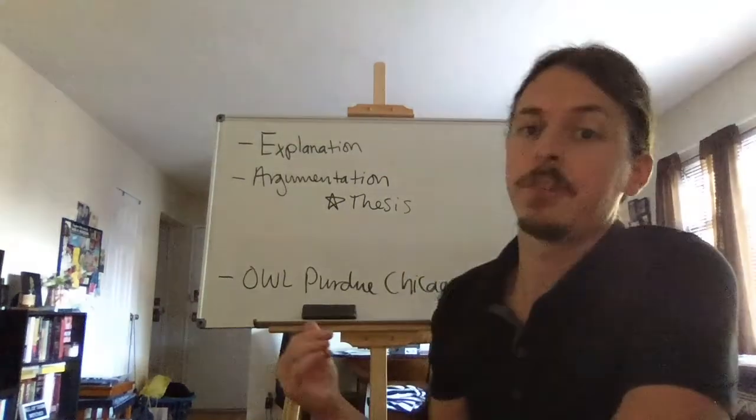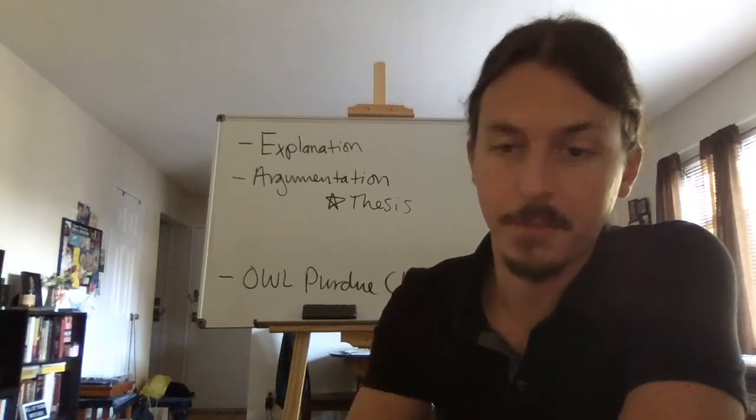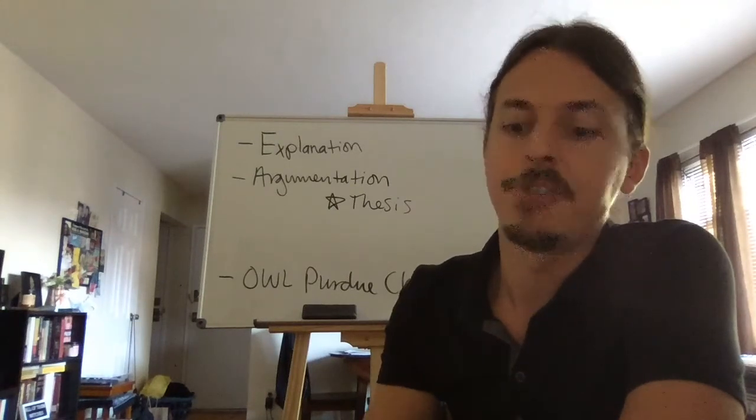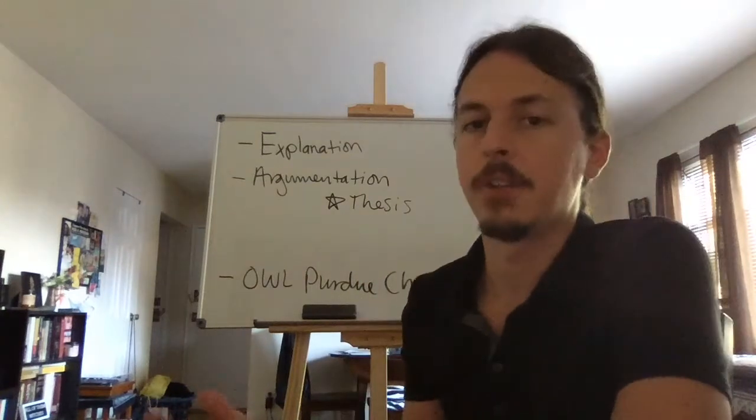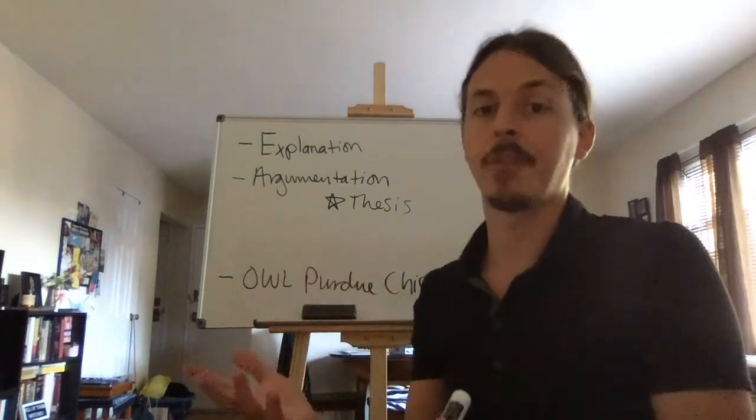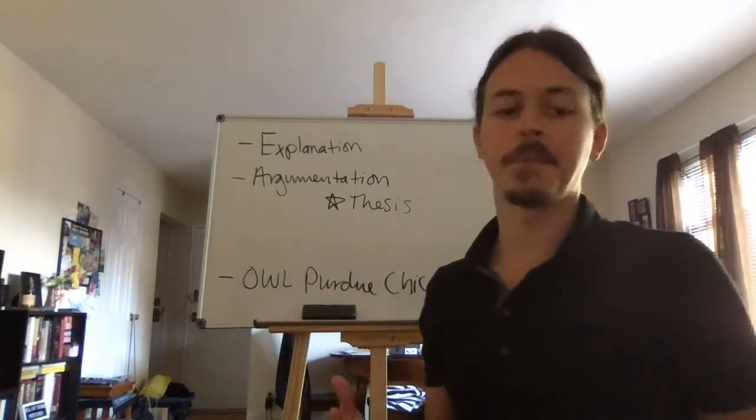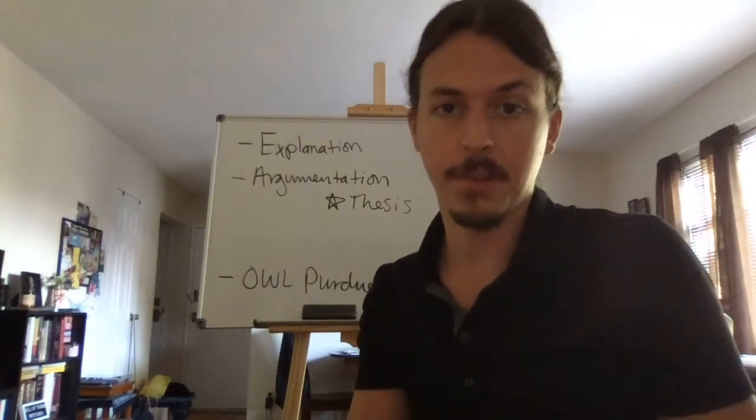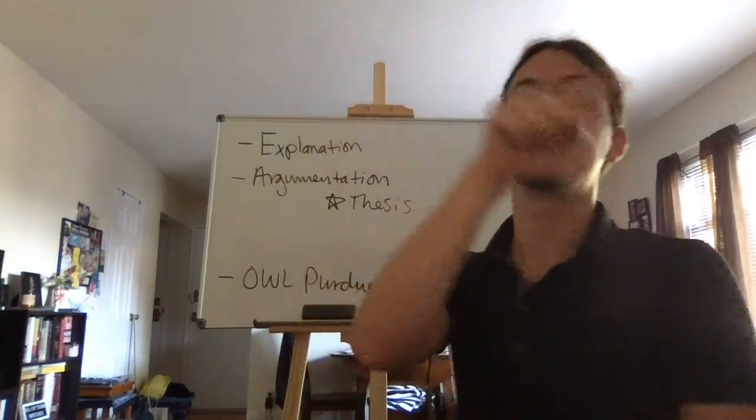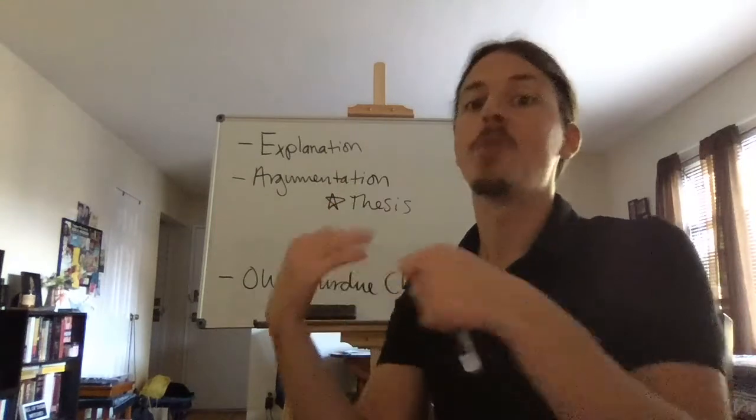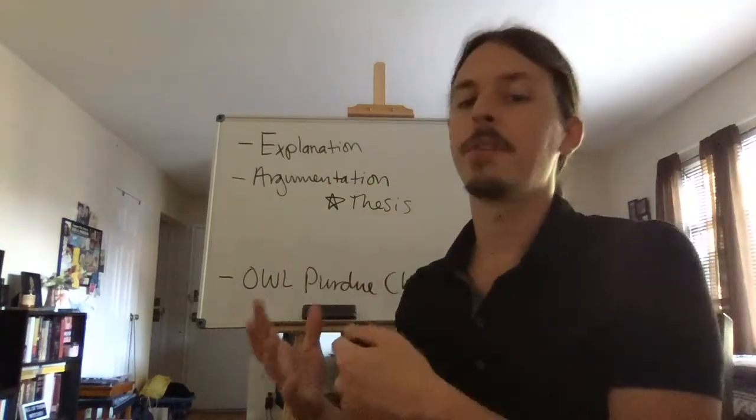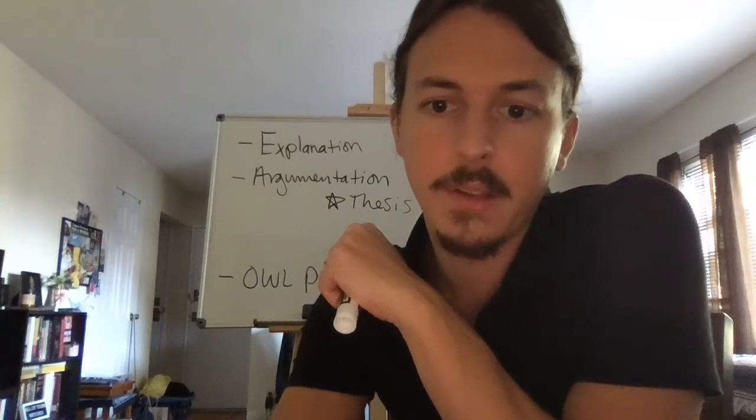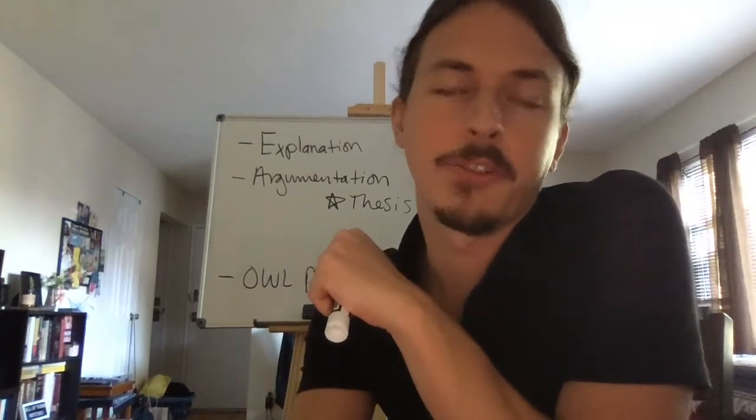After you've made your case, you want to consider at least one objection to your argument. What could someone say against the thing that you're saying? That's the objection. And you do this in order to show that you're thinking ahead. You're prepared to give responses. You're actually engaged, and you care about ideas other than your own. It shows you're really, really doing something scholarly. Now, after you consider the objection, you then need to consider a counterargument. And the counterargument is your response to the objection. How would you argue against their argument? Why do you think your original thesis still stands in the face of that objection? So you've got to do at least one of those. You can do more if you want. And it also allows you to identify potential weaknesses in your own argument.